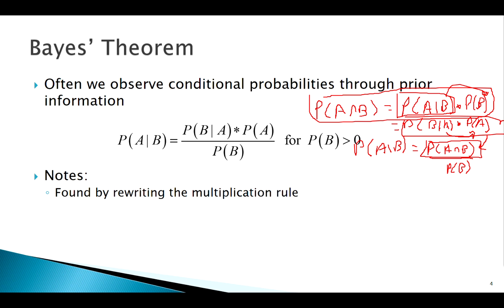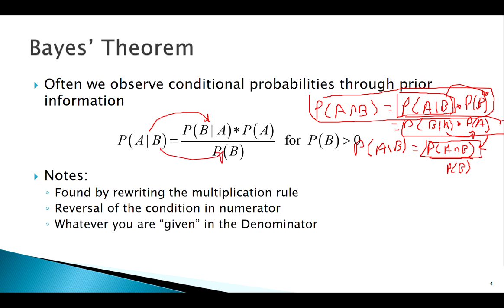We use the multiplication rule and know we can write it a couple of different ways. An easy way to remember Bayes' Theorem: in the numerator, take your conditions and flip them around. The denominator is whatever you're given. Lots of times, to find that denominator, you'll have to use the Law of Total Probability — especially when we're working with conditions and we don't know intersections directly.